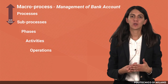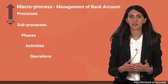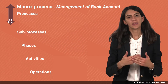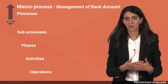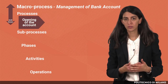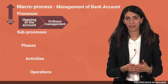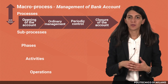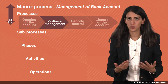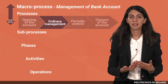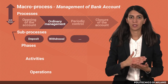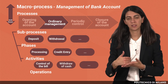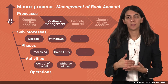For example, if we consider one of the macro processes of a bank, such as the management of a bank account, we can deploy it into different processes such as opening of the account, ordinary management of the account, periodic control, or closure. Each process, such as ordinary management of the account, can then be deployed into sub-processes, each sub-process into phases, each phase into activities, and each activity into basic operations.